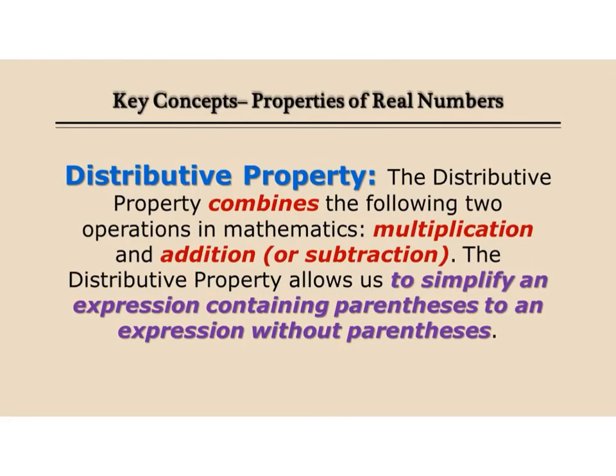The final property you're going to look at is the distributive property. The distributive property combines both multiplication and addition or subtraction to simplify an expression that has parentheses into an expression that doesn't have parentheses. So when you see something that has parentheses on one side and no parentheses on the other side of the equation sign, it's usually the distributive property.